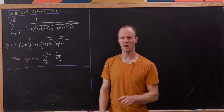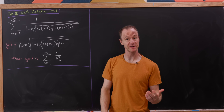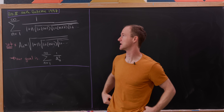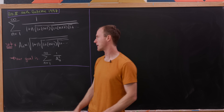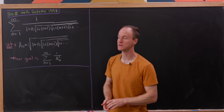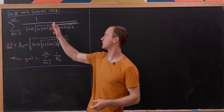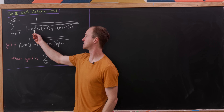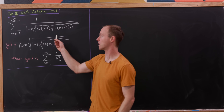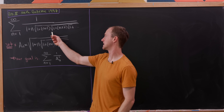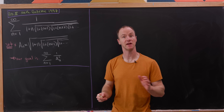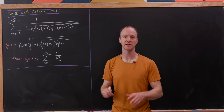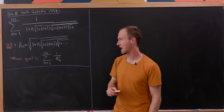Let's look at this nice sum of reciprocals of infinitely nested radicals. This comes from the Math Gazette in 1997. Our goal is the sum as n goes from 1 to infinity of 1 over 1 plus n times the square root of 1 plus n plus 1 times the square root of 1 plus n plus 2 times the square root of 1 plus — and I think you can see the pattern from there.